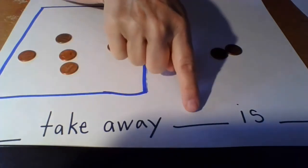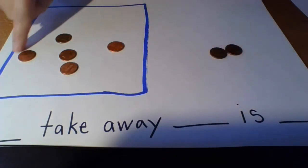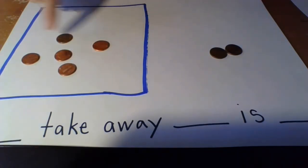Seven take away two is one, two, three, four, five. Five.